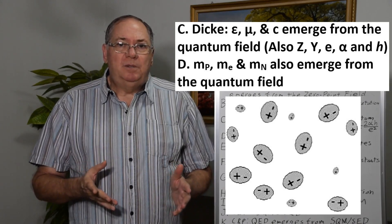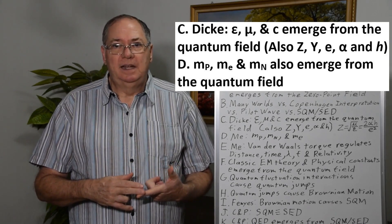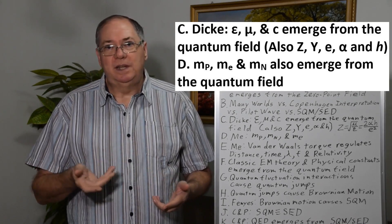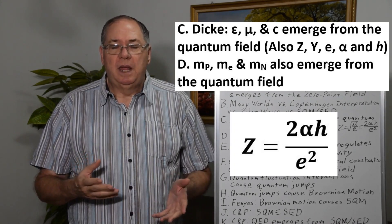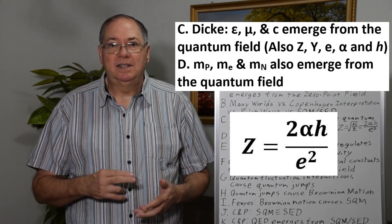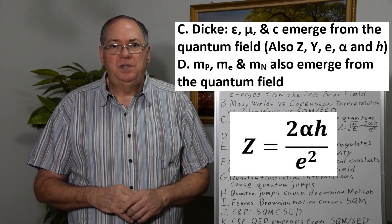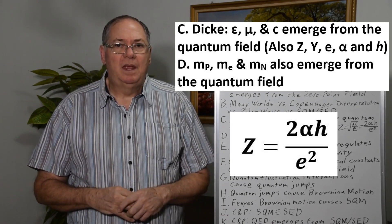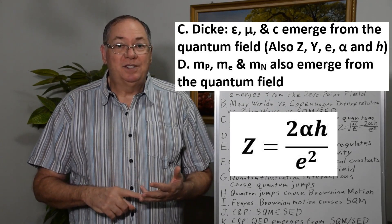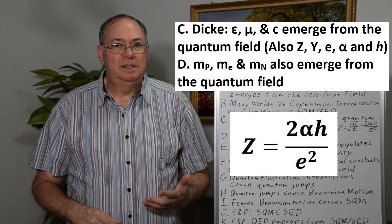But what people don't often realize is that means the impedance, which is the square root of permeability over permittivity, or the admittance, which is the inverse, are also emergent. But the impedance also equals 2 times the fine structure constant times Planck's constant divided by the electric charge squared. So 2 alpha h over e squared. That means the impedance, admittance, the electric charge, fine structure constant, and Planck's constant are all emergent properties of the quantum field.